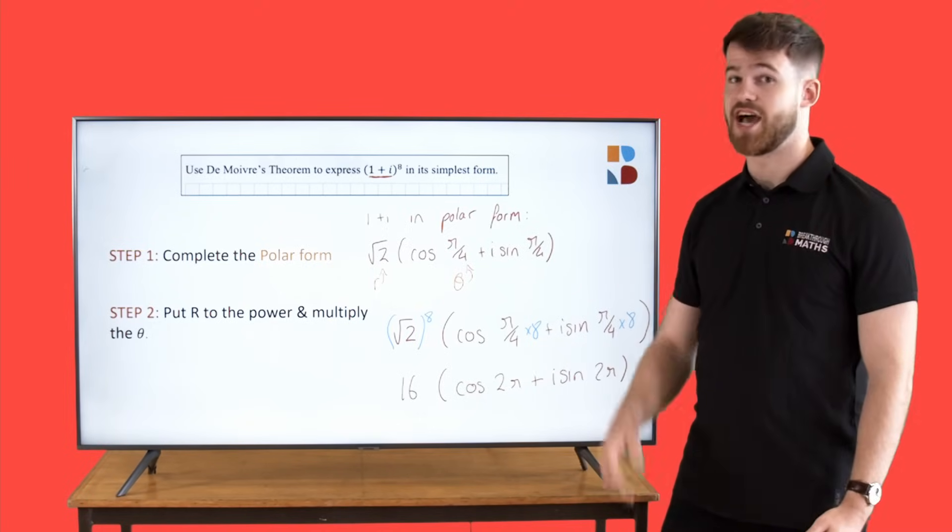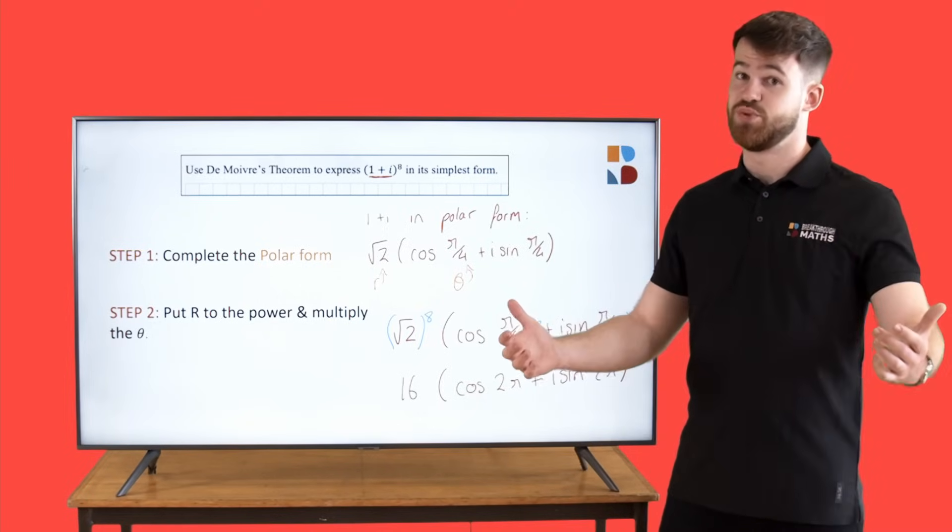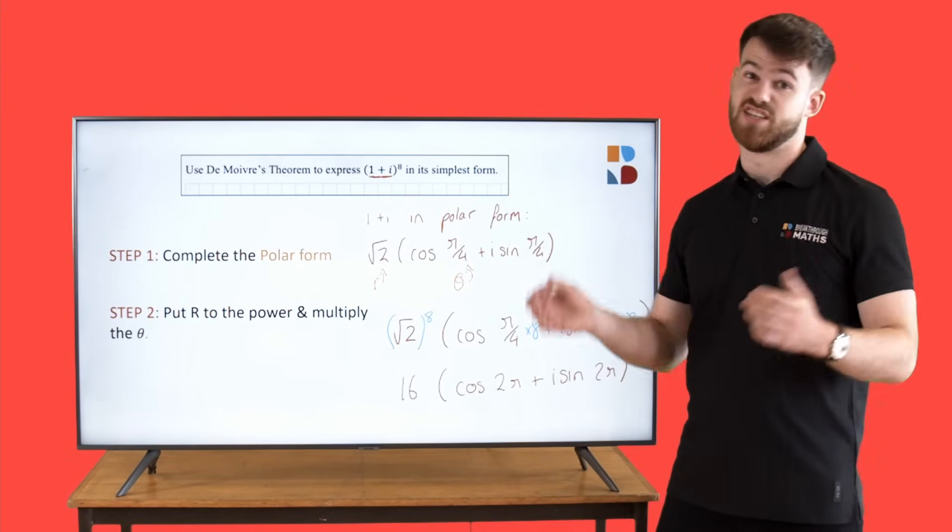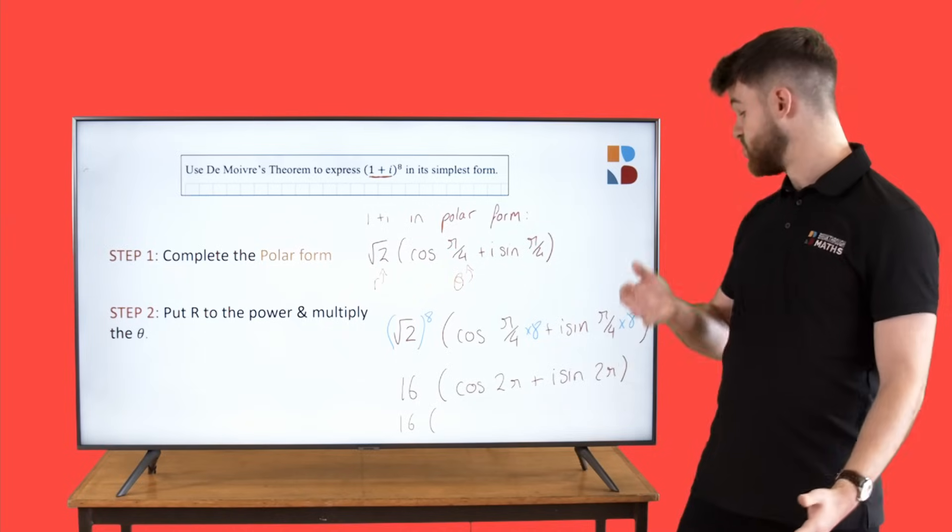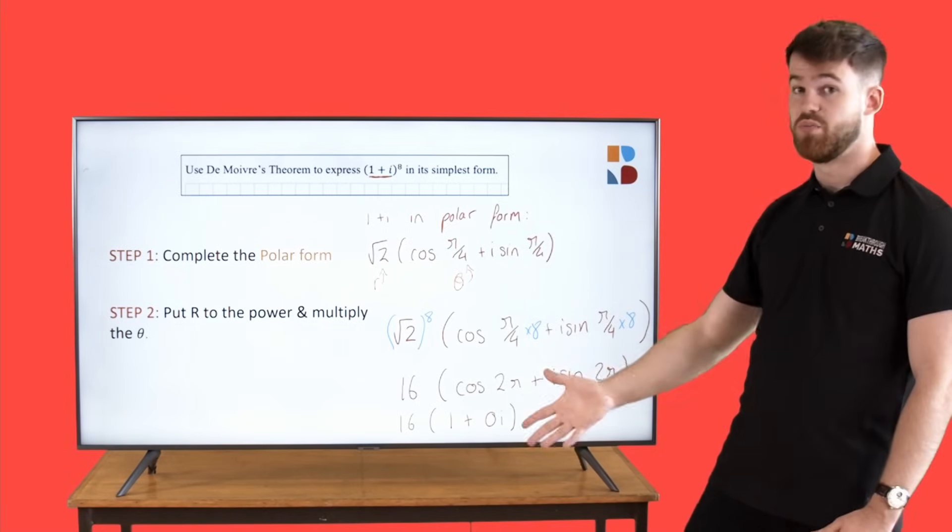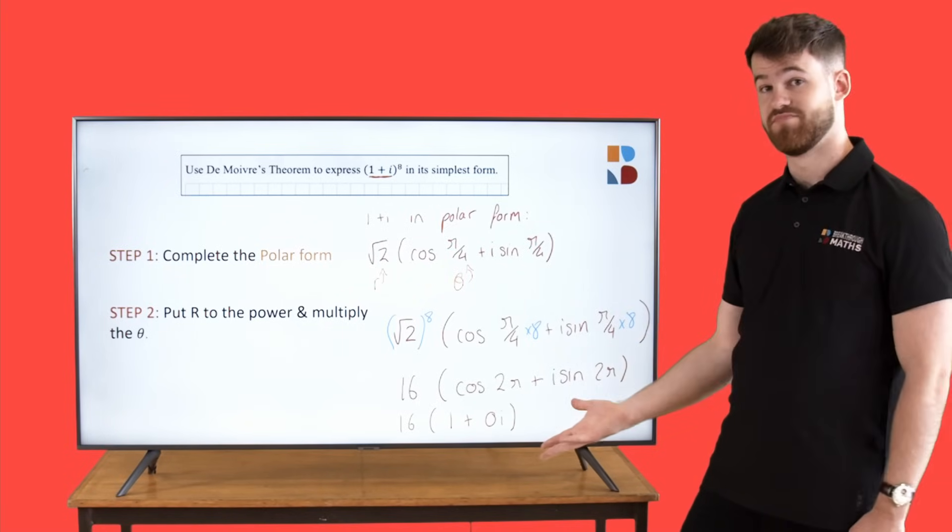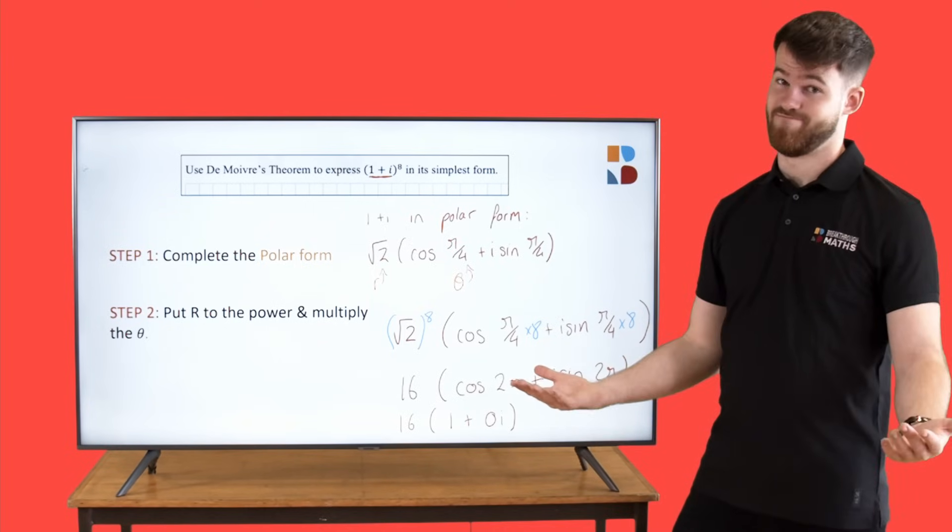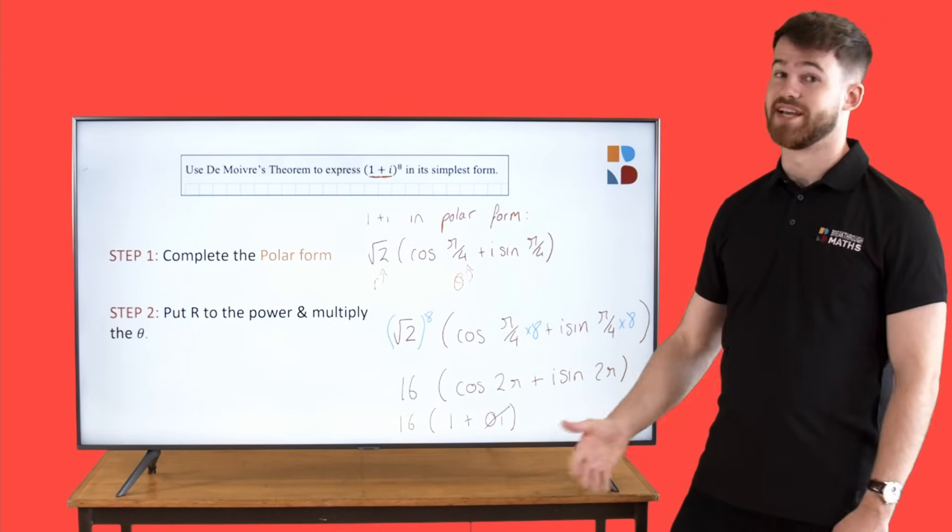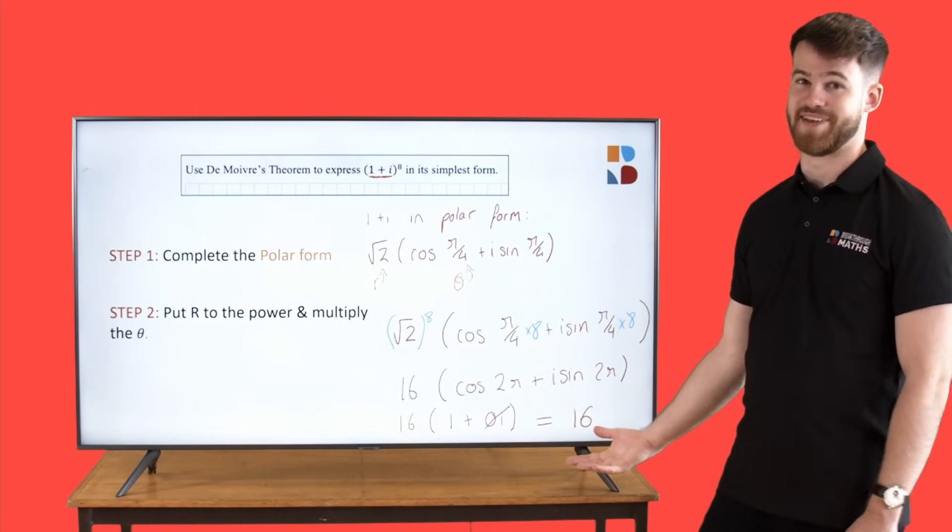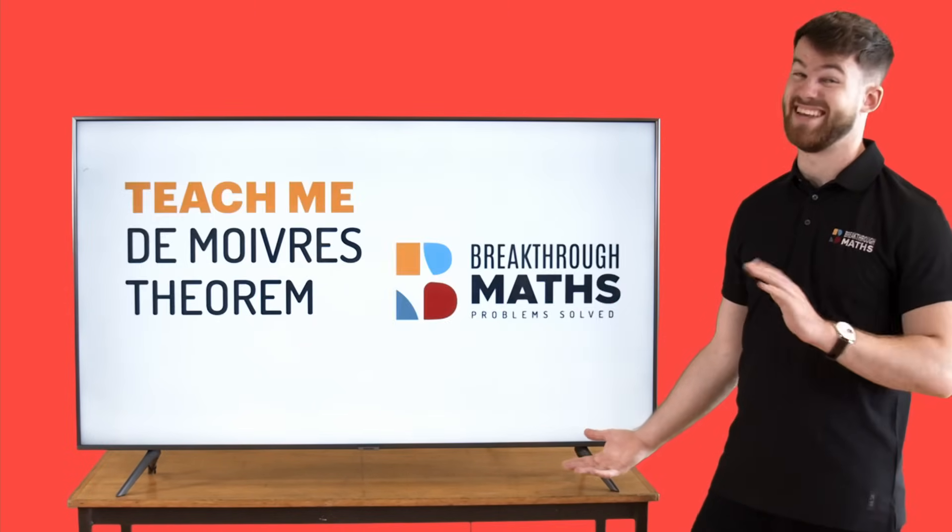Just put cos and sin into your calculator here. Cos 2 pi is going to give you 1, and sin 2 pi is going to give you 0. So we're just going to have 16 times 1 plus 0 times i. You can see here 0i just cancels. It's gone. So our final answer is 16 times 1, which is just 16. And that's De Moivre's theorem made easy.